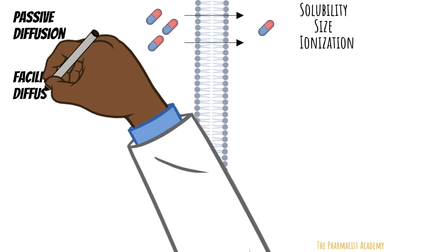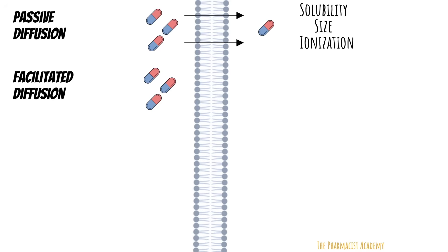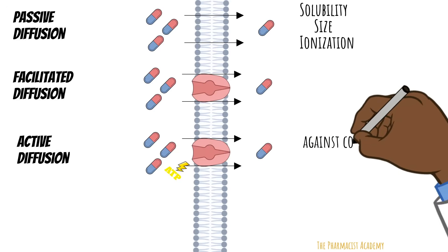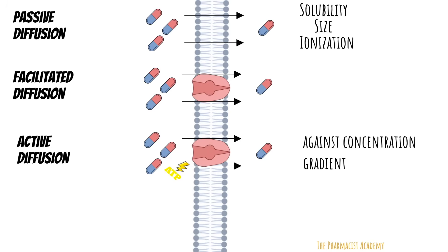Next is facilitated diffusion, also known as facilitated passive diffusion. It is the same as passive diffusion where the drug moves from high concentration to low, but in this case it gets help from a carrier protein. The drug binds inside the carrier protein, which then opens up on the other side and releases the drug. Active transport also requires help from a protein on the membrane, but unlike facilitated diffusion, it requires energy in the form of ATP. This allows it to go against a concentration gradient, transporting drugs into the blood regardless of the relative concentration.